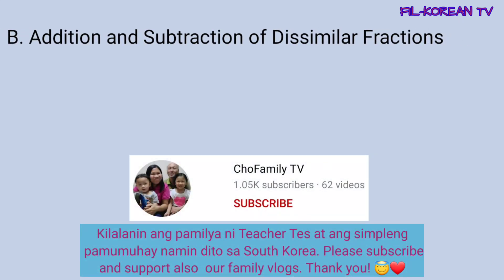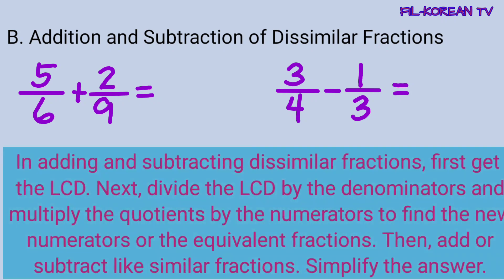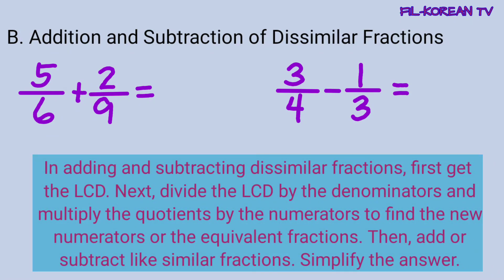Let's proceed to addition and subtraction of dissimilar fractions. Let's solve these problems. These fractions are dissimilar fractions because the denominators are not the same. In adding and subtracting dissimilar fractions: first, get the LCD. Next, divide the LCD by the denominators and multiply the quotients by the numerators to find the new numerators or the equivalent fractions. Then, add or subtract like similar fractions. And simplify the answer if possible.